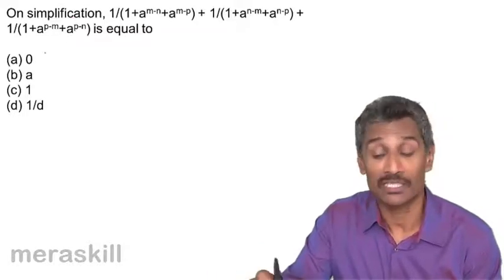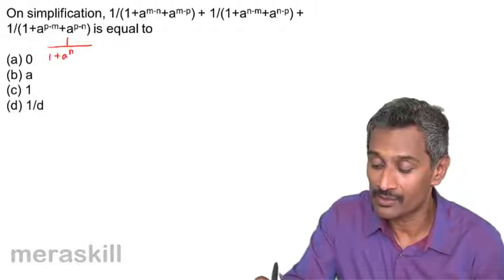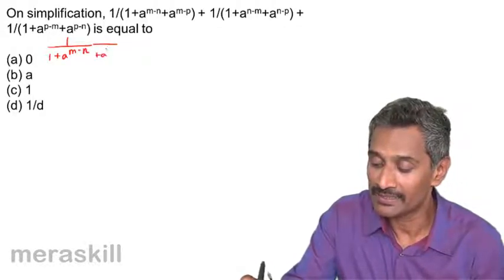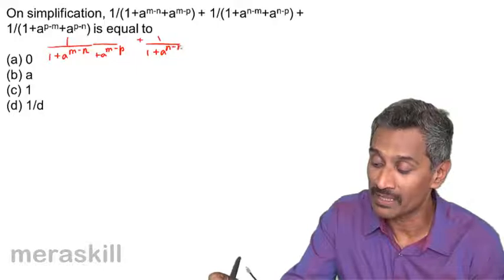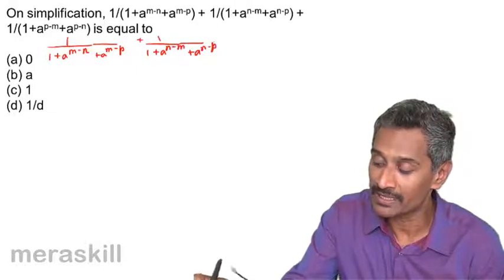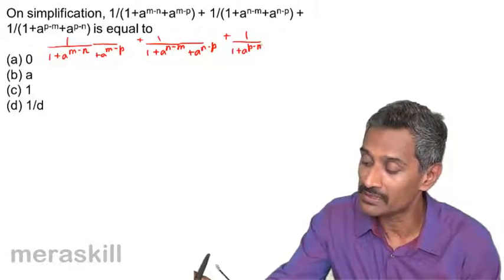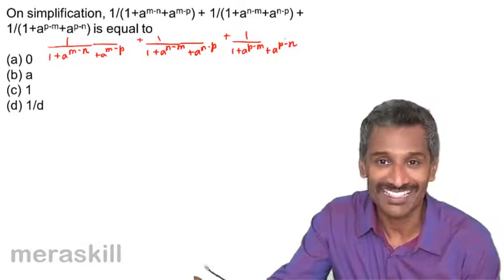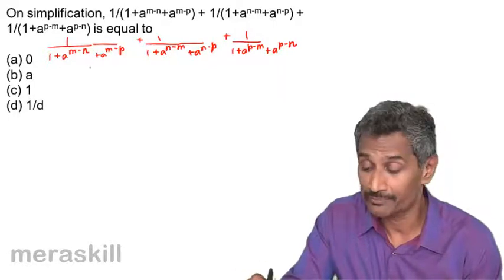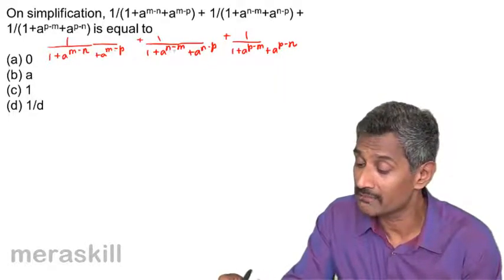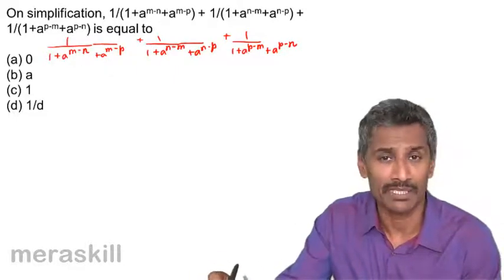So what we have here is this particular expression: 1 upon 1 plus a raised to m minus n plus a raised to m minus p, plus 1 upon 1 plus a raised to n minus m plus a raised to n minus p, plus 1 upon 1 plus a raised to p minus m plus a raised to p minus n. If you look at it, there are too many terms and taking the LCM to simplify could complicate the whole thing.